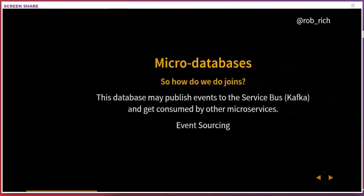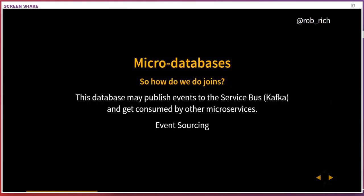So micro databases — how do we do joins? Do I need to call that microservice in a loop asking for the next record? When we want to do this type of thing, we can look towards service buses, perhaps Kafka. I would create events that happen in my application and publish those events any time my data changes. Other microservices may choose to subscribe to those events and keep track of that data.